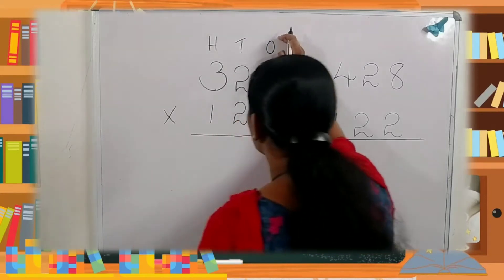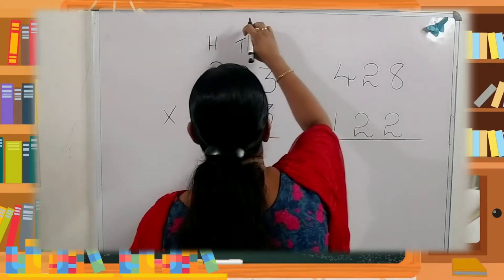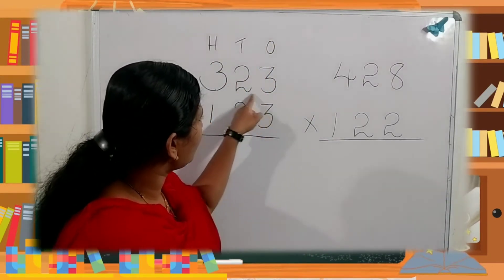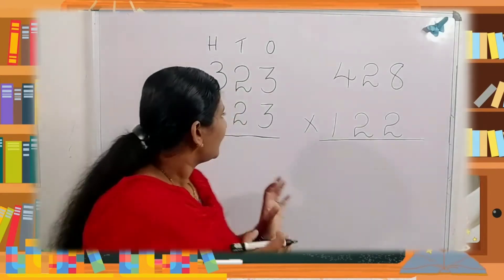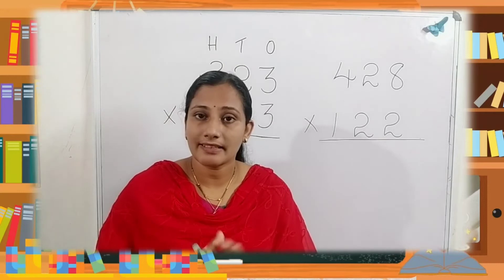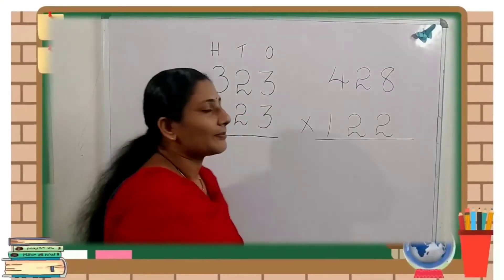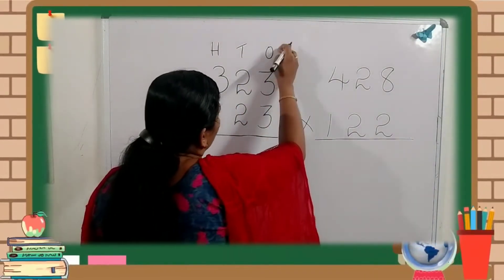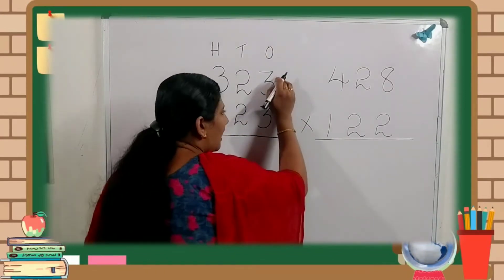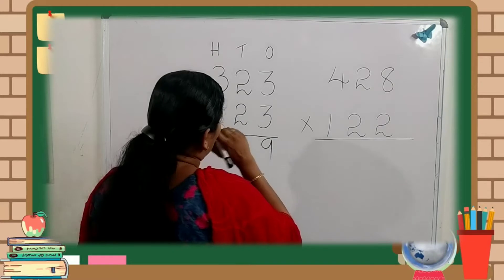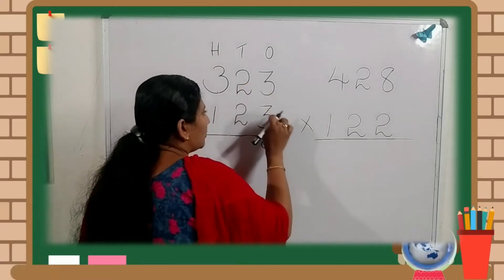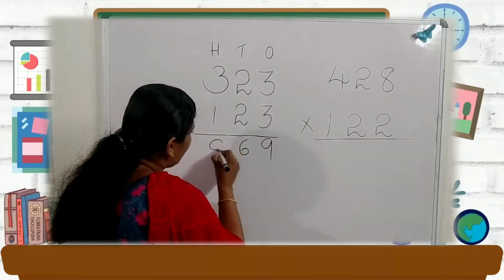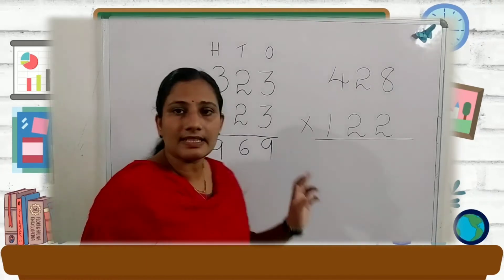Children, there are three places: the ones, tens, and hundreds. First, which number do we take for multiplying? That is three. So three is multiplied by these three digits, starting from the ones place. Three threes are nine. Then three multiplied by two — three twos are six. Next, three threes are nine. The first step is over.